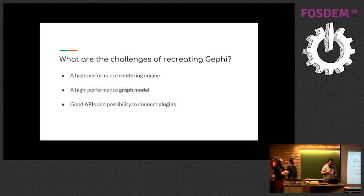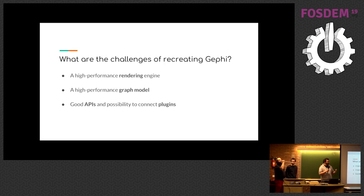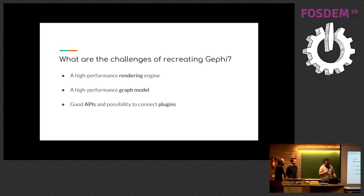Also, it needs to have a performant graph model. We need to be able, at the same time we're drawing the whole graph 30 times per second, to compute community detection algorithms or ranking algorithms — all still smoothly and without freezing. And finally, one of the main qualities of Gephi is its plugin capabilities. You have to be able to implement a specific algorithm for your business needs and integrate it inside Gephi without rebuilding the whole thing.